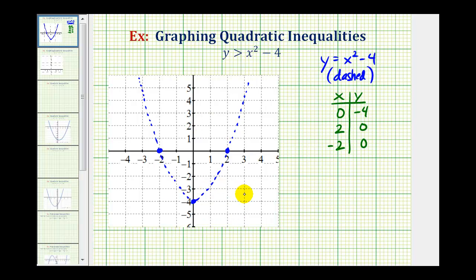To determine which region to shade, we'll pick a test point and see if the coordinates satisfy the inequality. If it satisfies the inequality, we shade the same region of our test point. And if it's false, we shade the region the test point is not in. The easiest point to test is the origin because the coordinates are zero, zero, as long as it's not on the graph. If it's on the graph, we'd have to pick a different point.